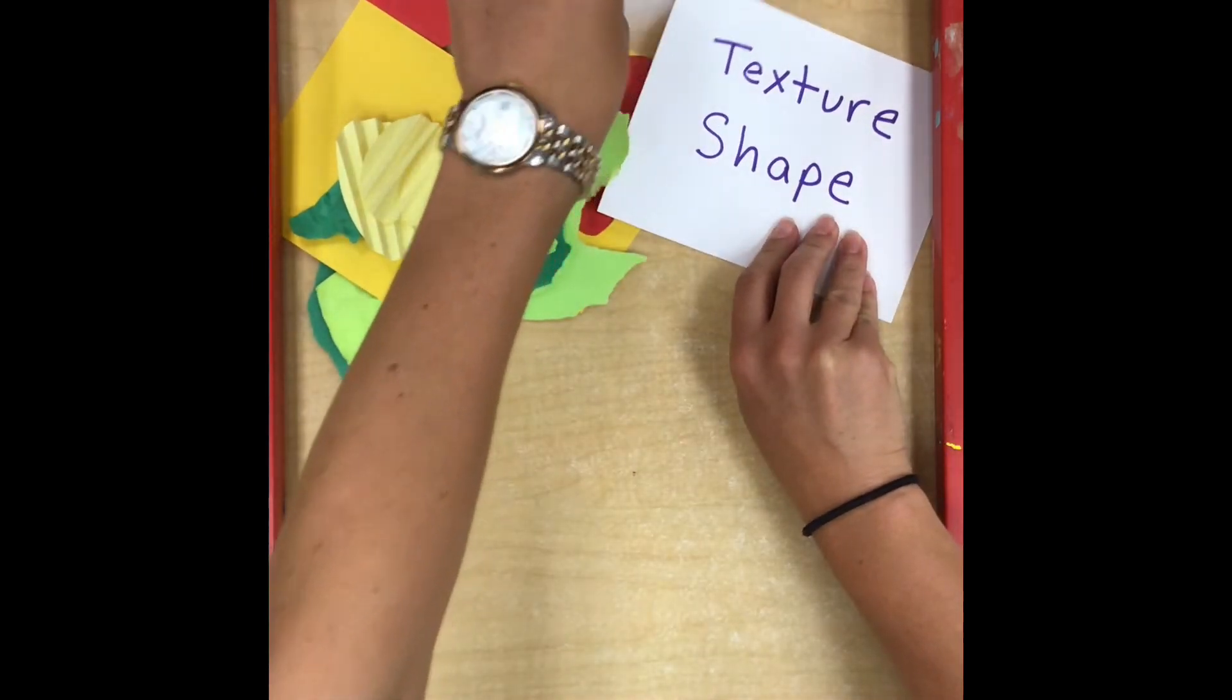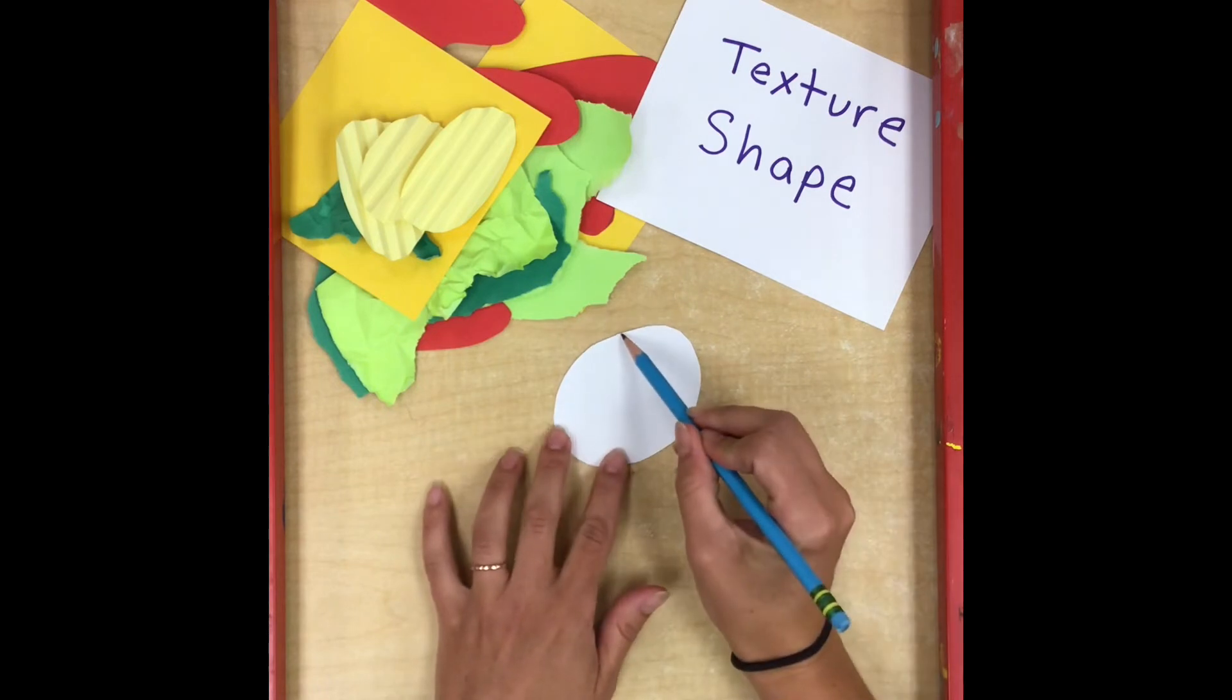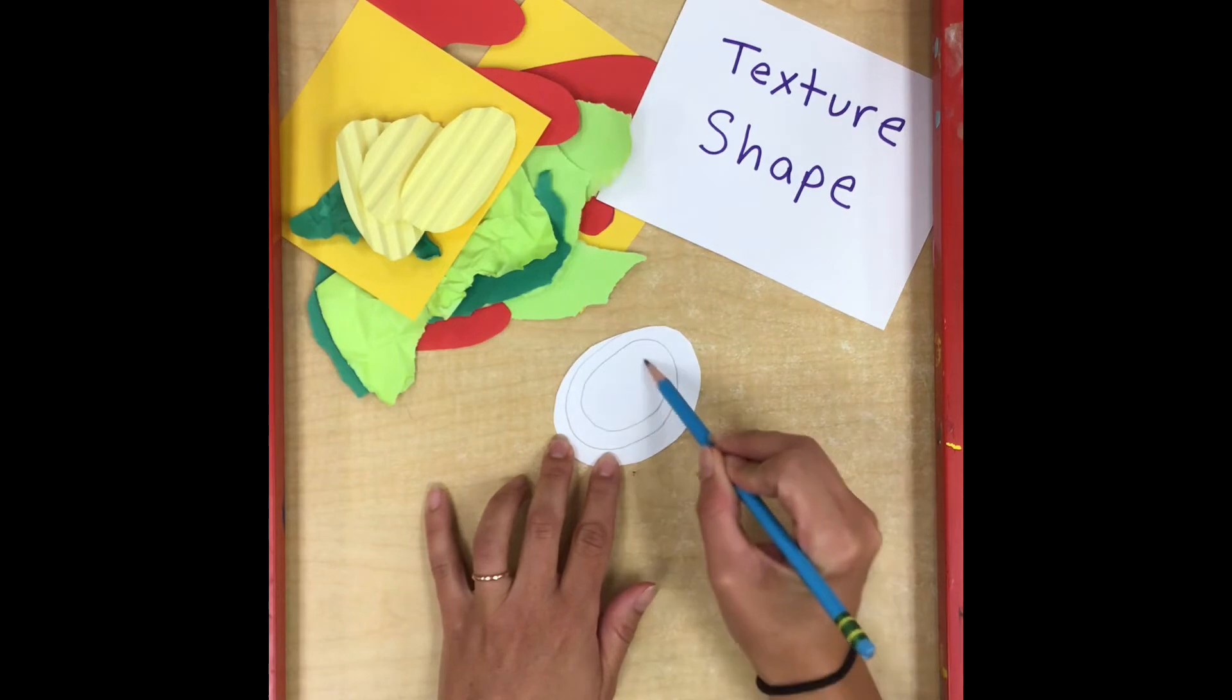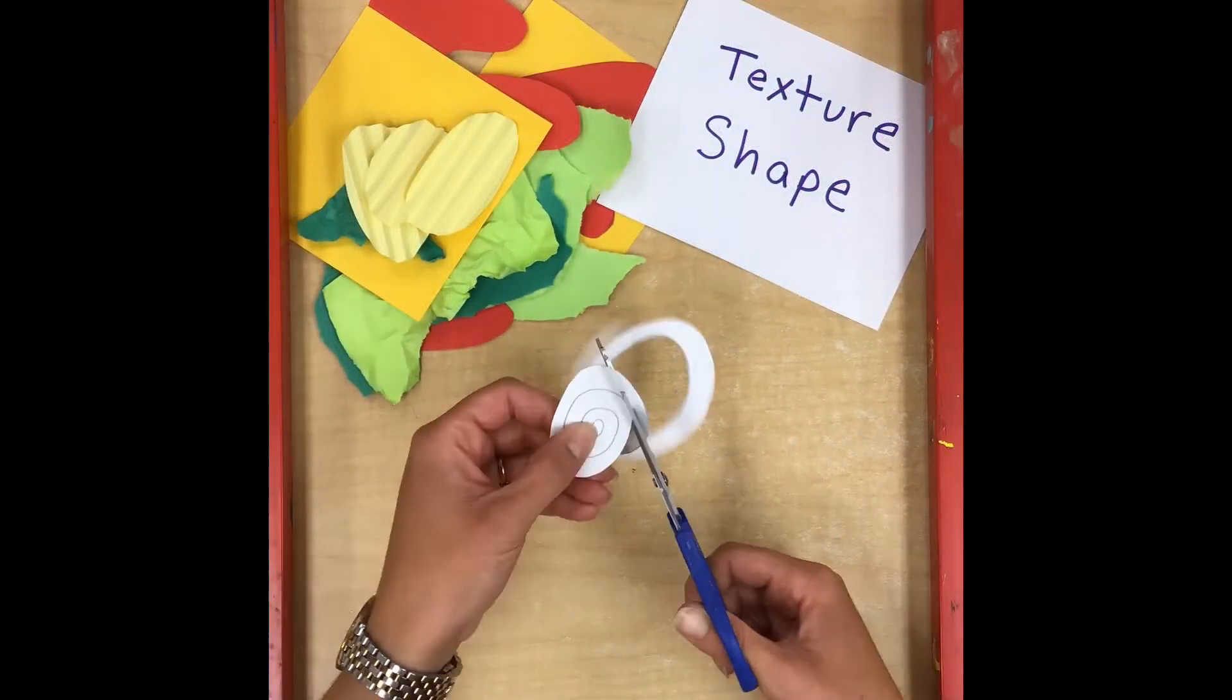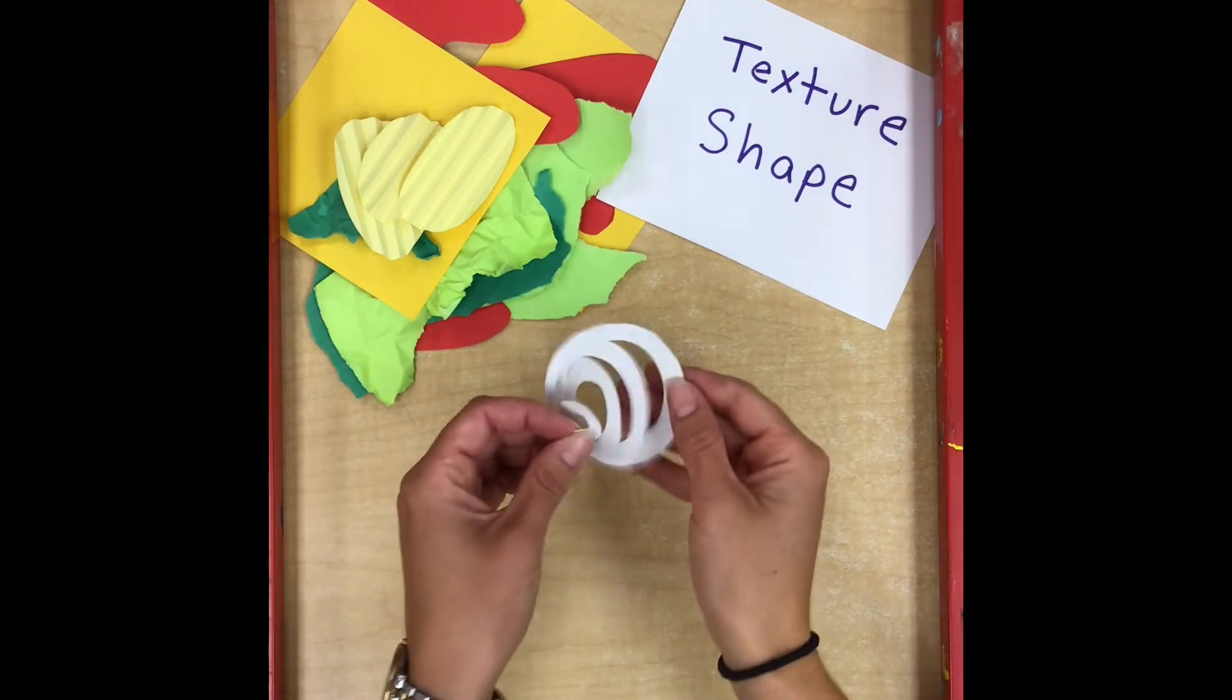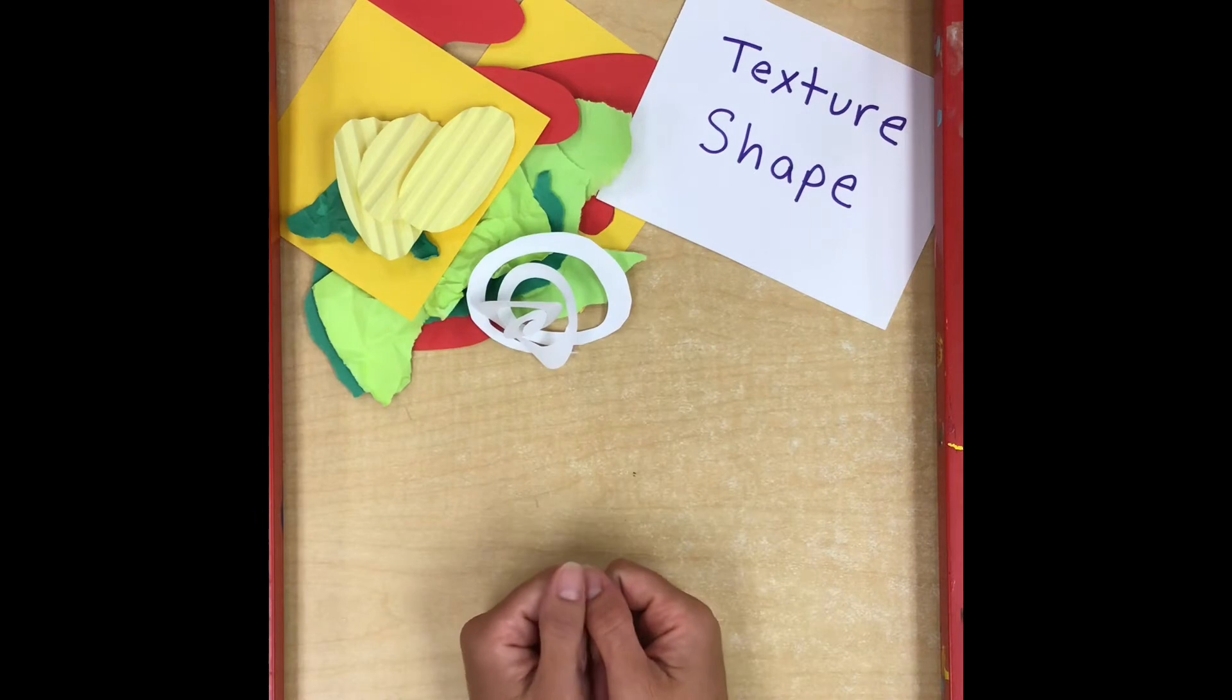Another cool thing that some students have asked me about is how I do my slices of onion. And all I do is I start with a circle and then I draw a spiral line. And then I cut on that line using my helper hand trick that we talked about earlier. So now when I pull apart my spiral, it kind of looks like slices of onions on your burger. If you kind of let it pop up a little bit like that.